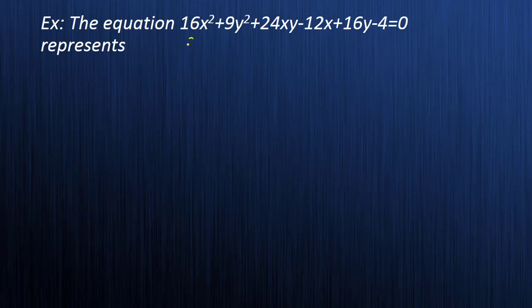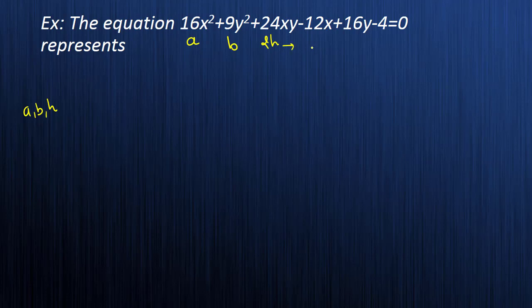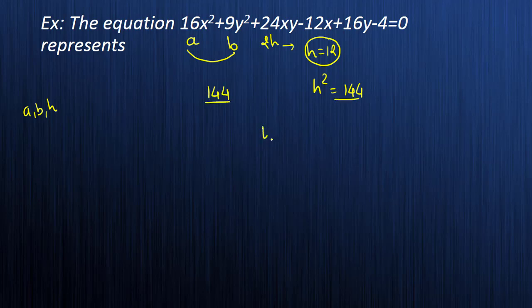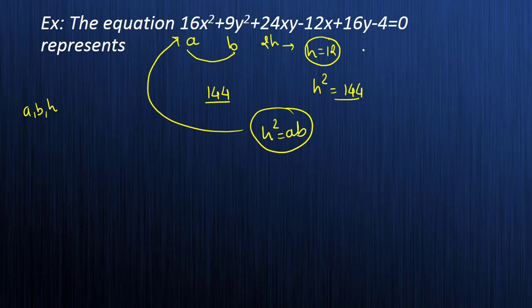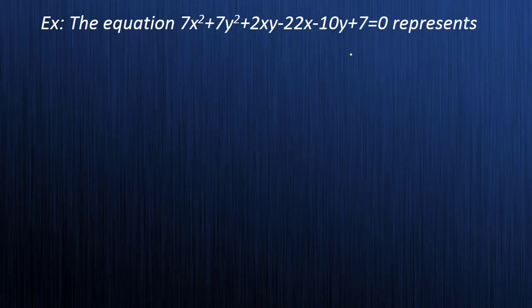Next example: the equation has a = 16, b = 9, and 2h = 24, so h = 12. Then h² = 144, and a × b = 16 × 9 = 144. Again h² = ab, so the equation again represents a parabola.